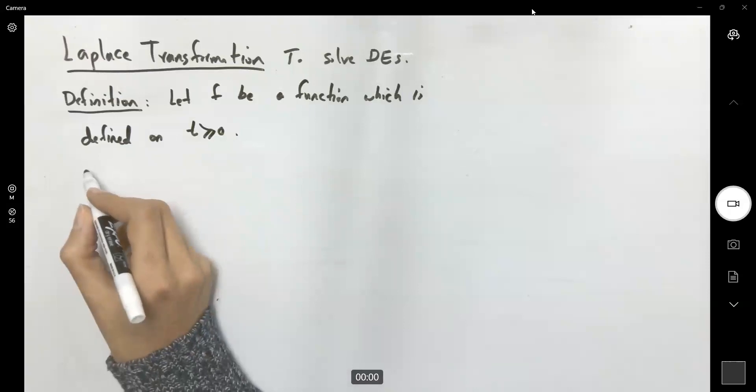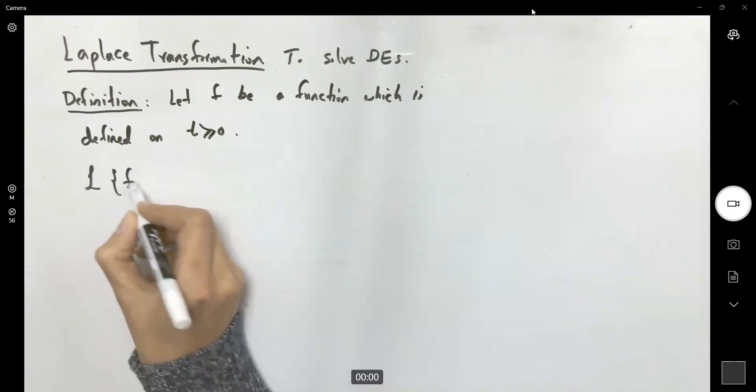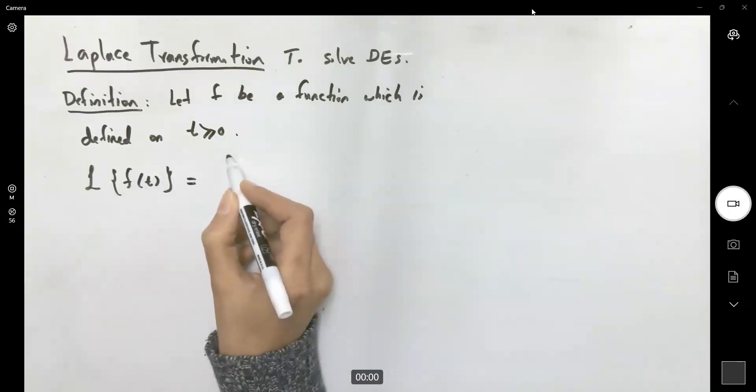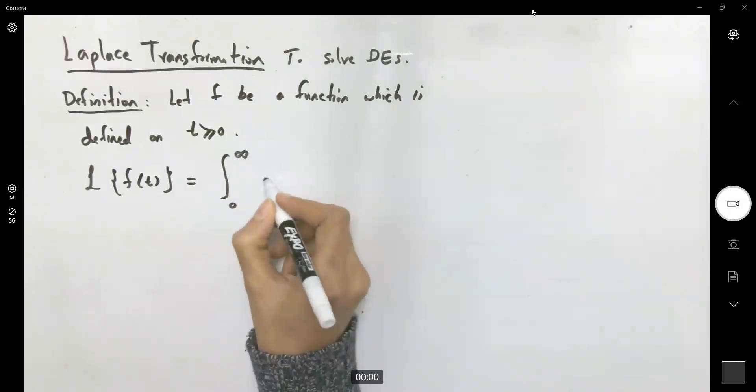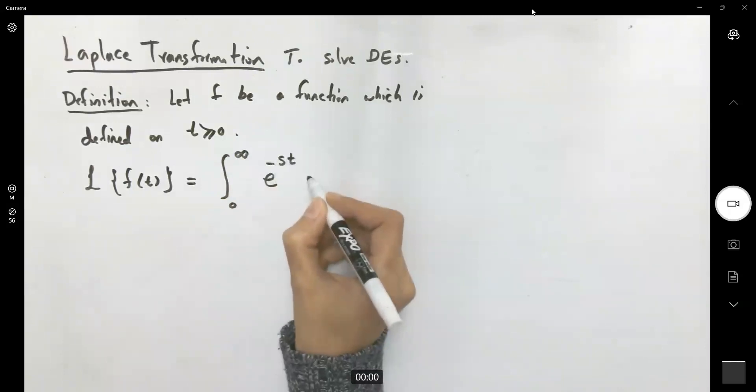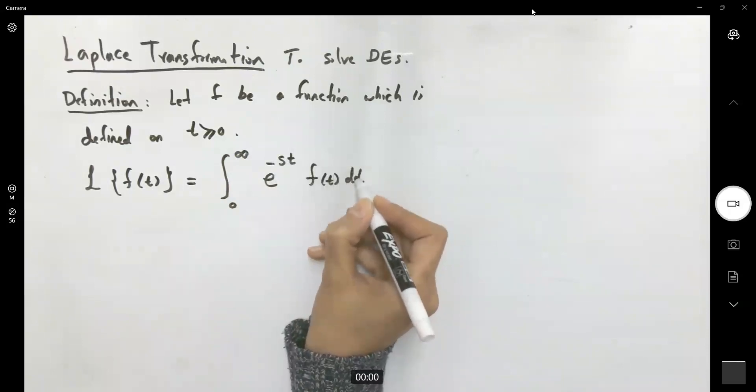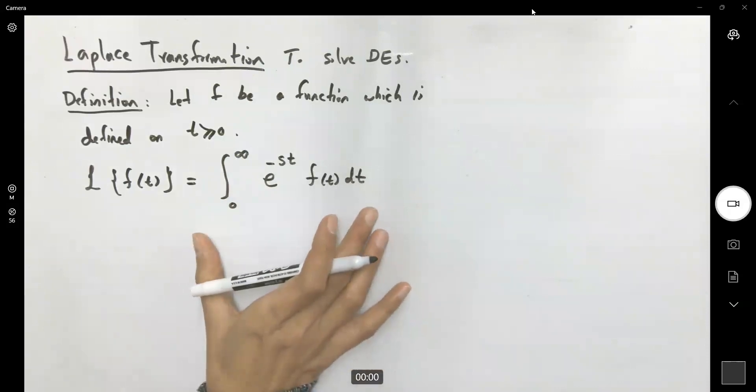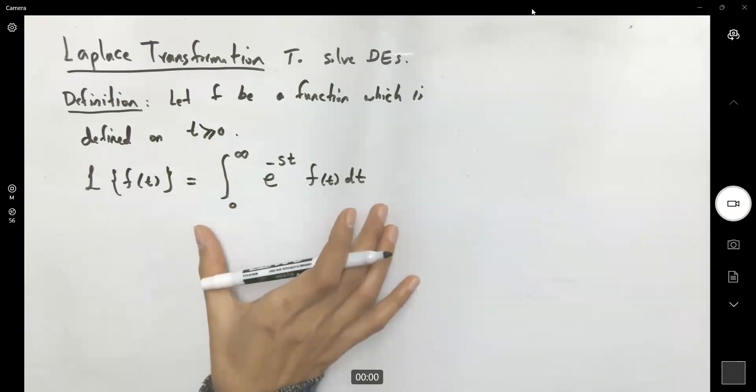The Laplace transformation is an integral. Laplace of function f is defined as the integral zero to infinity e to power negative st times f of t dt. This integral is said to be Laplace transformation of f if the integral converges.